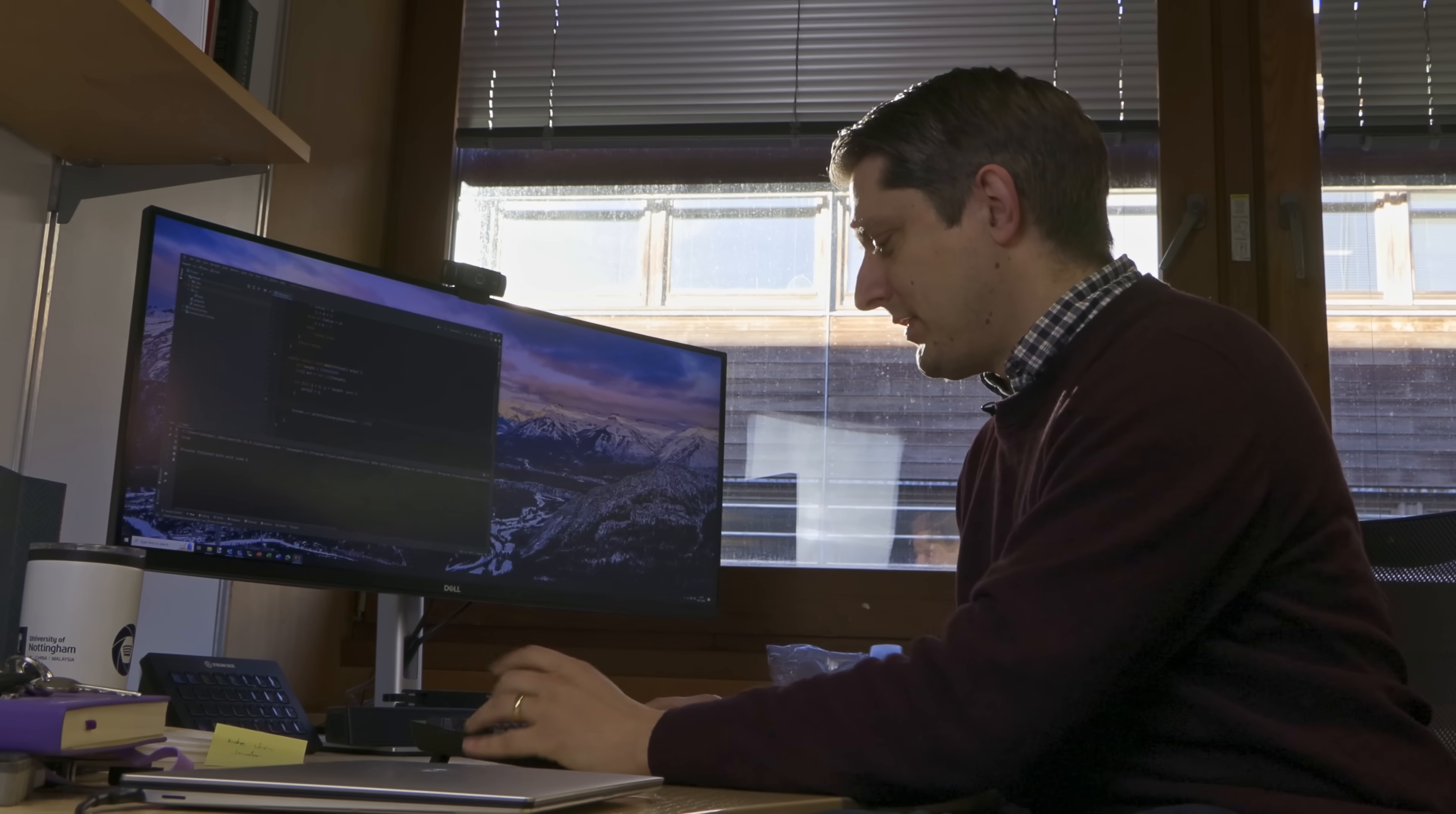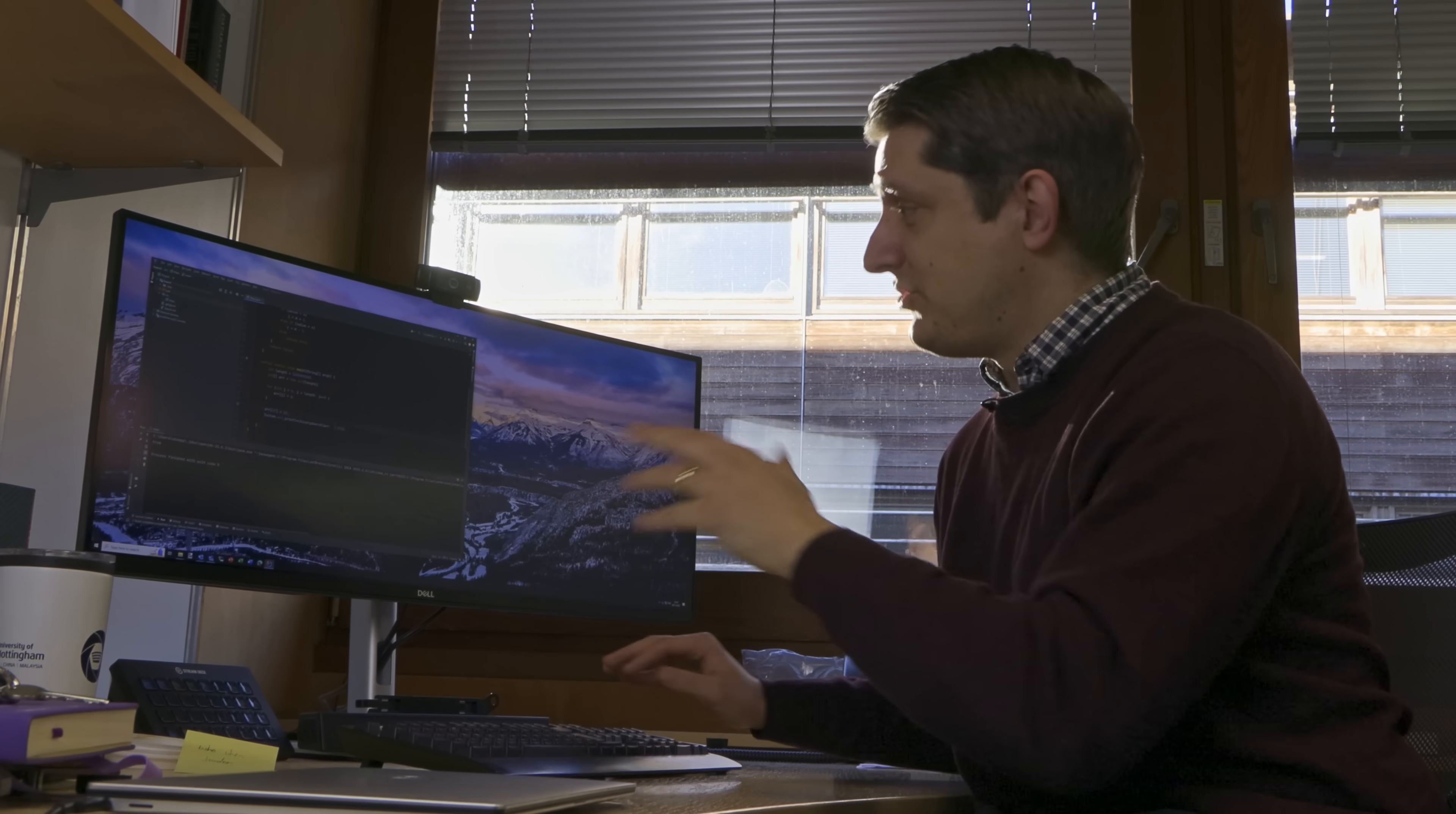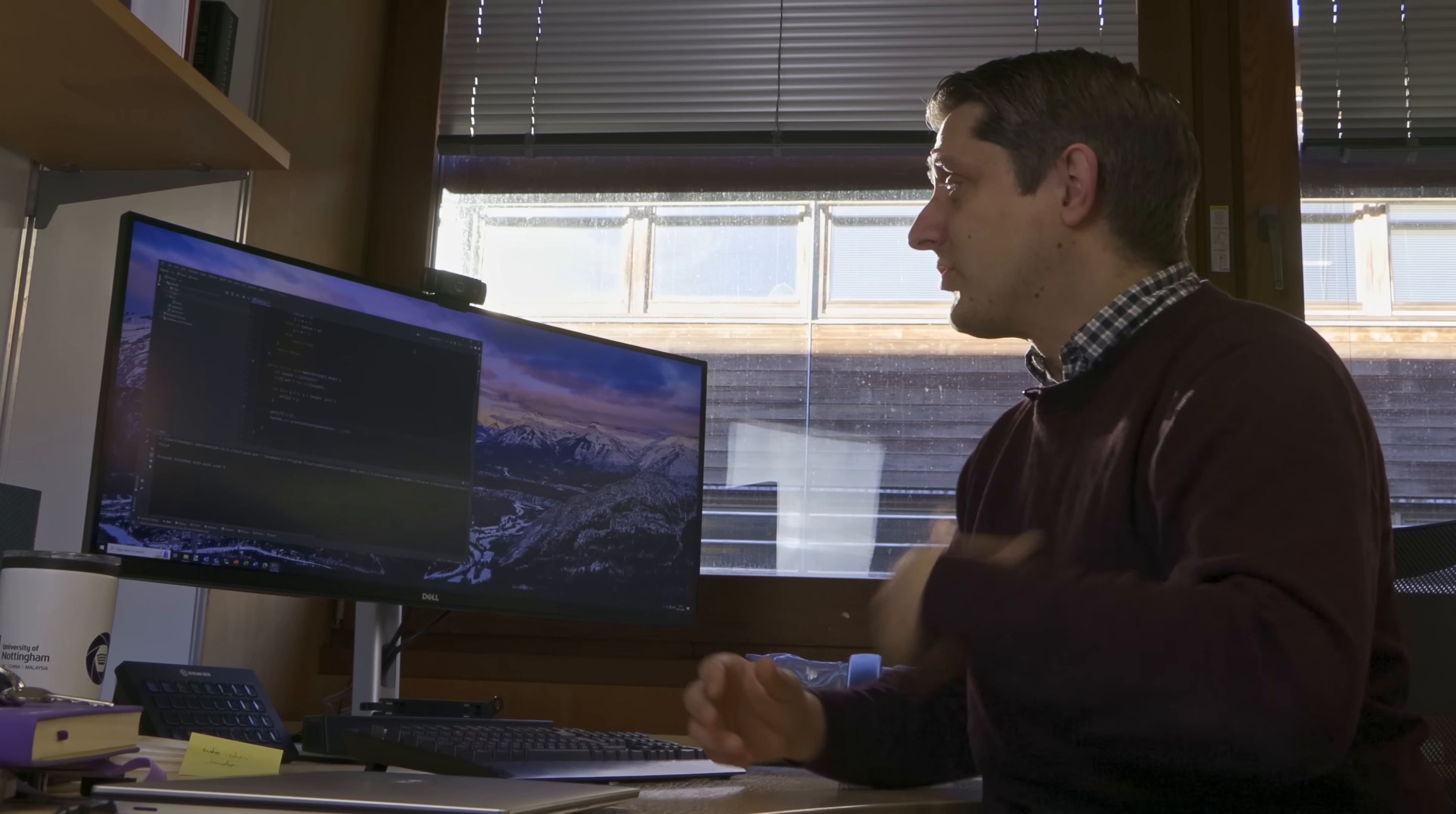Now, suppose we remove 17 from the array. So, all I'm going to do is, in front of this line, I'm going to say, array at 17 is going to be 16. So, what I'm doing there is just saying there's going to be two 16s in a row, which is not ideal, but it will be fine. There's no longer a 17 in the array. This should return false. Cut to the bit where it says false. False. So, it's working. So, our binary search is working.